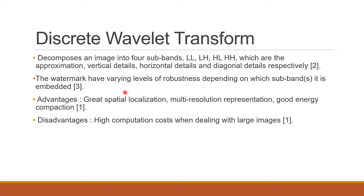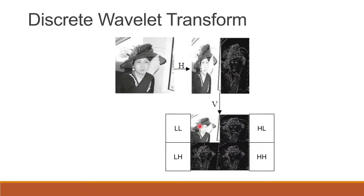Next is DWT, which decomposes an image into four subbands: LL, LH, HL, and HH. Depending on where the watermark is embedded, it will have varying levels of robustness. DWT has the advantages of great spatial localization, multi-resolution representation, and good energy compaction. However, it has high computation cost when dealing with large images. In the DWT representation, the original cover image goes through horizontal transform and then vertical transform to obtain four subbands, each with half the dimensions of the original cover image.